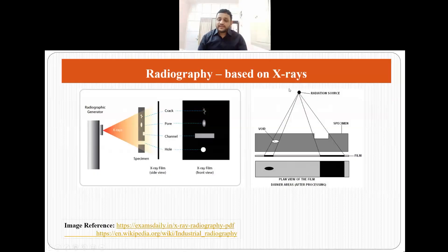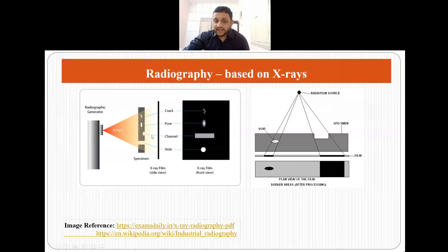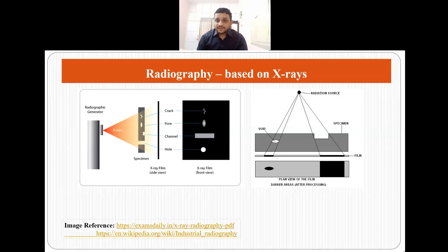This radiography testing is based on x-rays. We have an x-ray tube or x-ray source from which x-rays are generated. These x-rays are made to fall on a specimen and the returning x-rays fall on a radiographic film. The contrast in the radiographic film tells us whether there are any cracks, pores, channels, holes or any other kind of inhomogeneity present in a material.